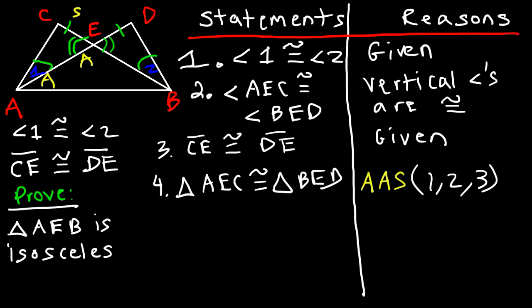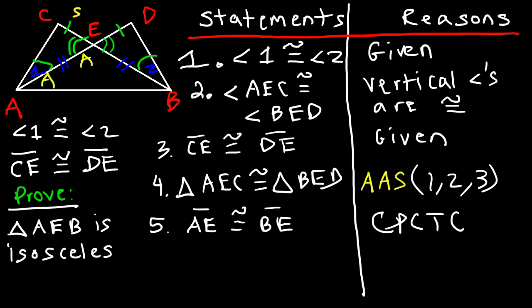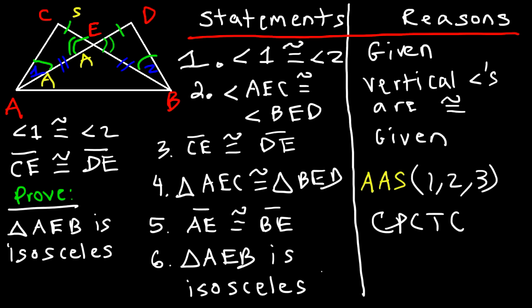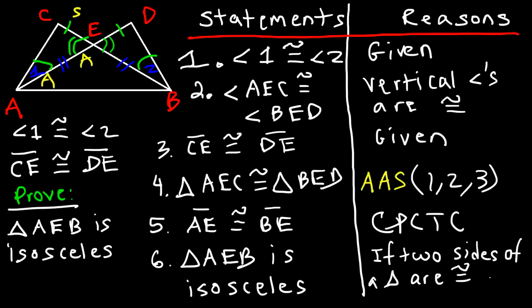Now that the two triangles are congruent, their corresponding parts are congruent. Statement five: AE is congruent to BE — reason: CPCTC. Final statement: triangle AEB is isosceles. The reason: if two sides of a triangle are congruent, then the triangle is isosceles.